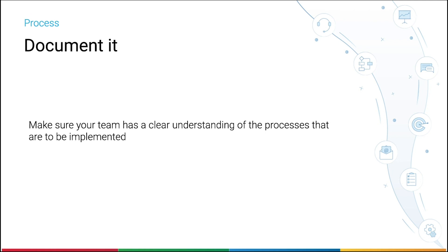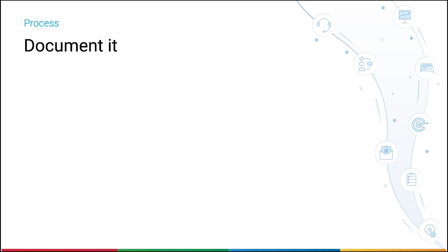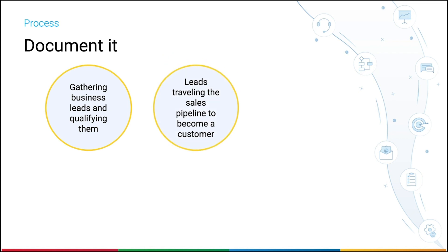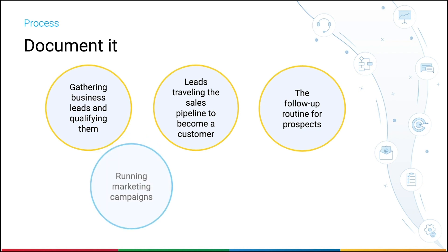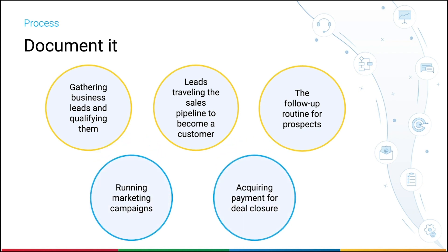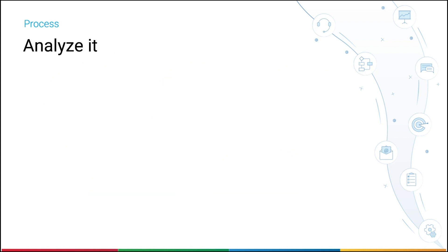You can have a flow diagram of how you gather your business leads and qualify them, how the leads travel in your sales pipeline to become a customer, follow-up routines for prospects, running marketing campaigns, and acquiring payment for deal closure. Next, analyze it.